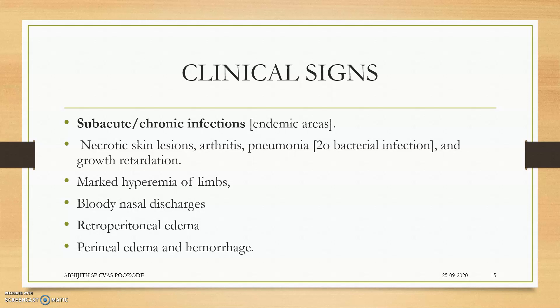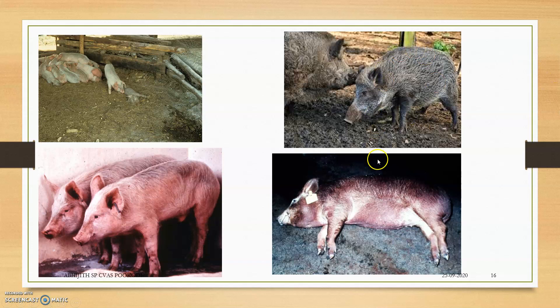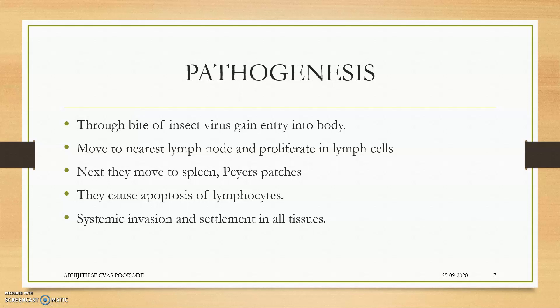The main clinical lesions include perineal edema, retroperitoneal edema, and bloody nasal discharge. You can see complete cyanosis of the body — ear cyanosis and snout cyanosis. Pathogenesis: through the bite of an insect, the virus gains entry into the body or through direct contact or fomites. It moves to the nearest lymph node, proliferates in lymph cells, then moves to the spleen and Peyer's patches, causing apoptosis of lymphocytes, reducing immunity, and allowing secondary bacterial infection.